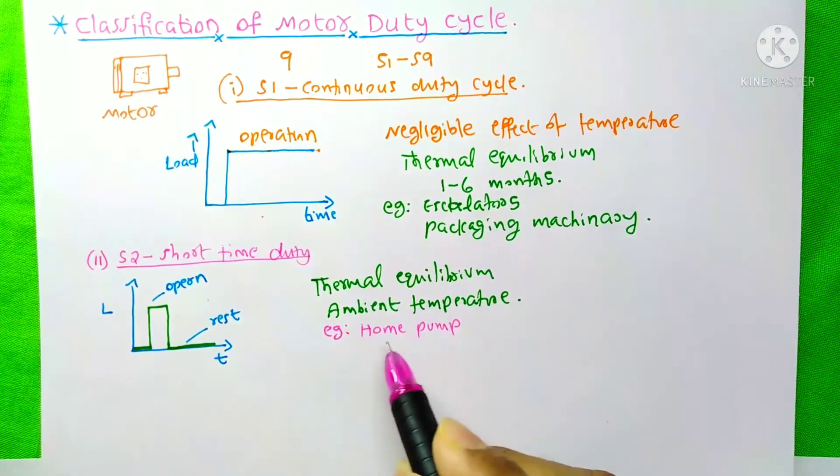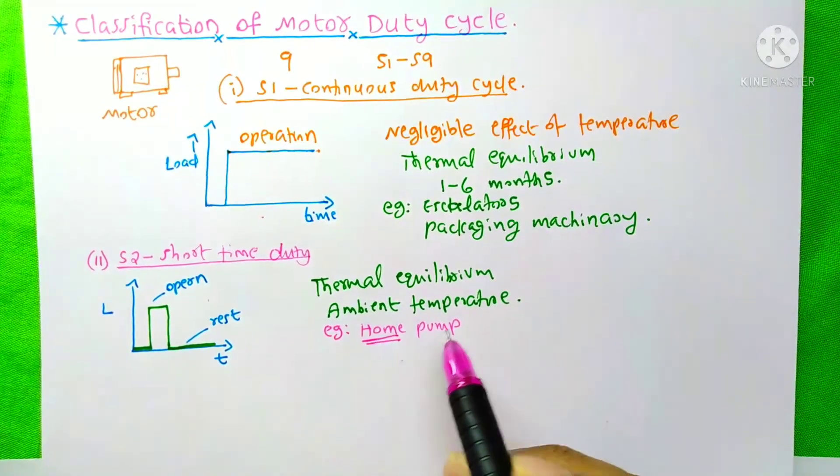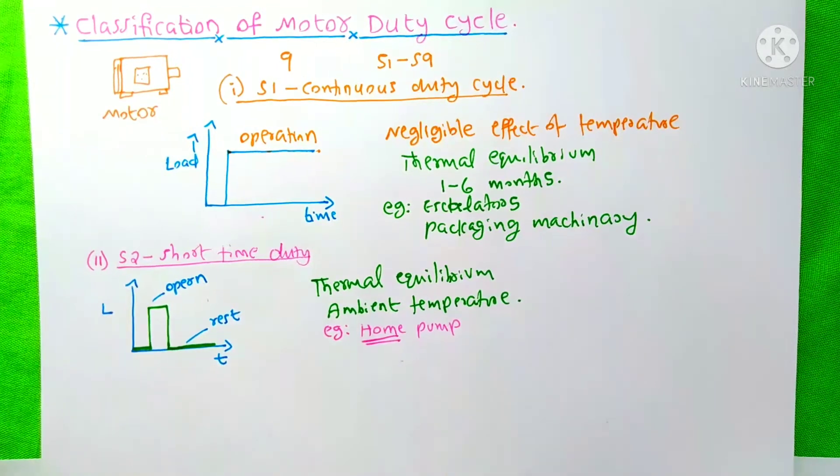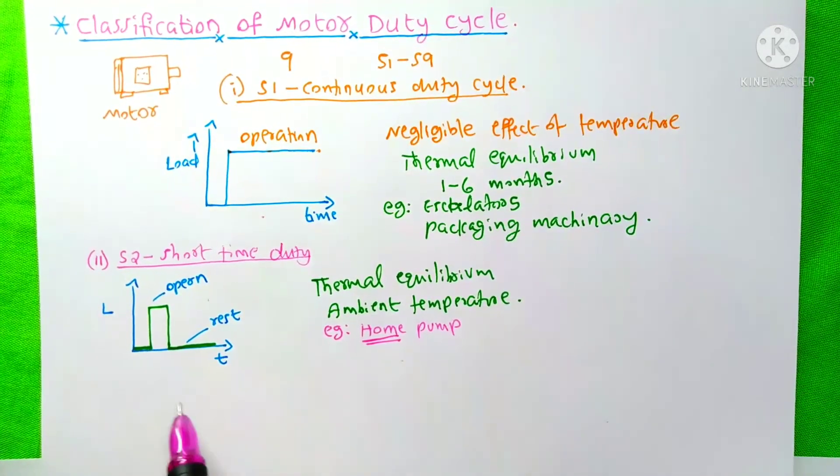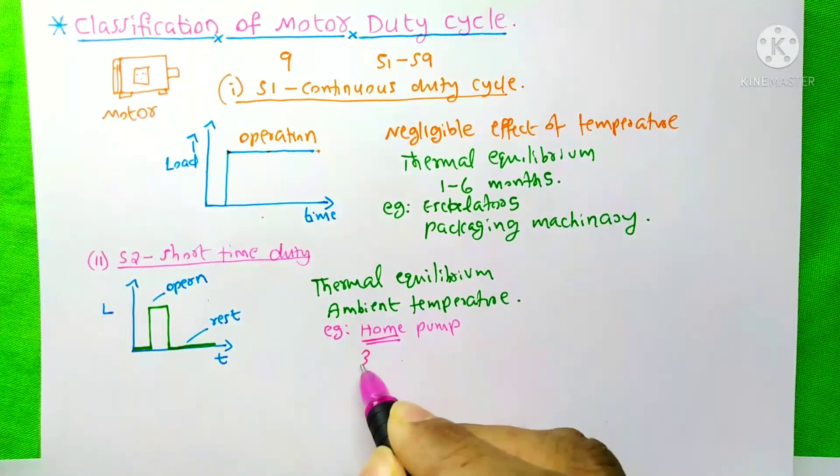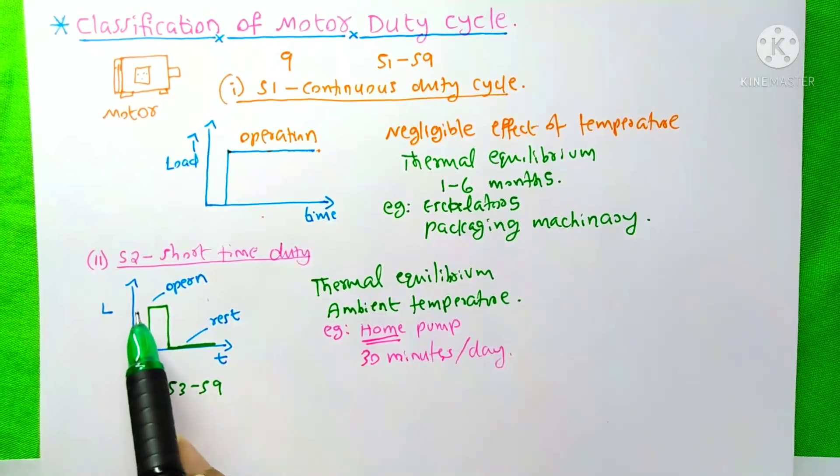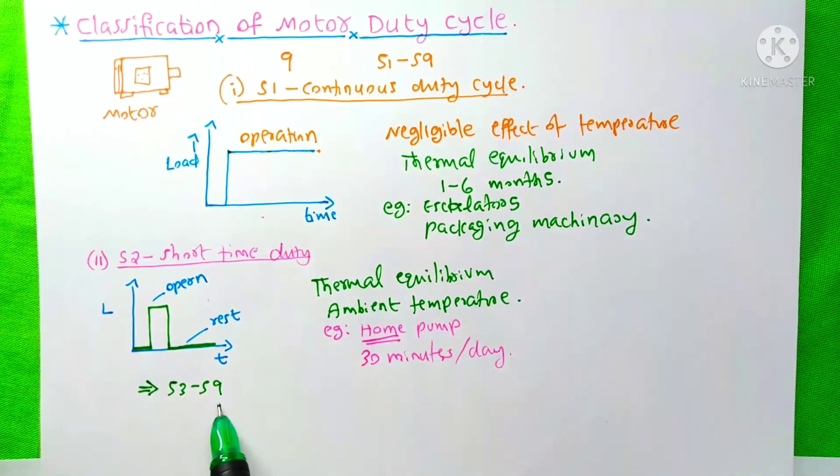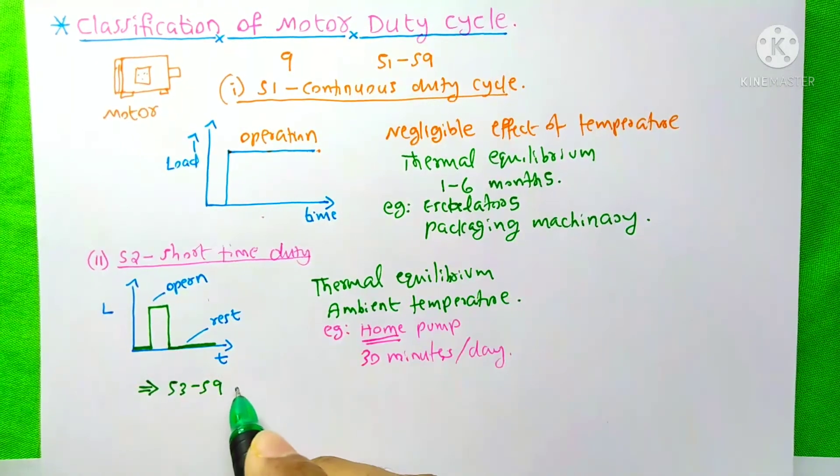The pump that we use in our home is an example of this duty. Generally, we run this type of motor for 30 minutes per day. After this S2, from S3 to S9 are periodic duty cycles.